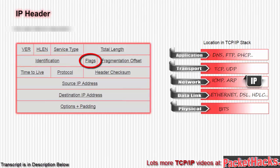Next you have flags — a 3-bit field. Bit 0 is reserved. Bit 1 is Do Not Fragment: if set to 1, the datagram may not be fragmented, so if the MTU is too small, the datagram is dropped. MTU stands for maximum transfer unit, which will also be covered shortly. Bit 2 is More Fragments: if set to 1, then the datagram is not the last fragment.